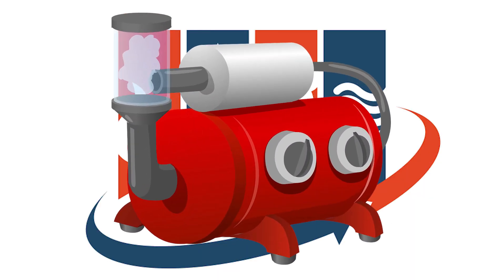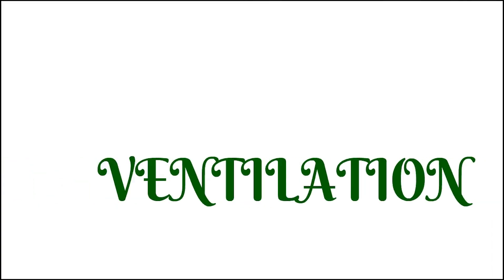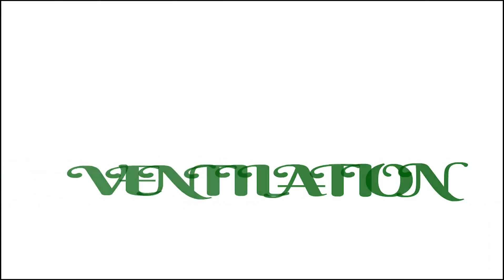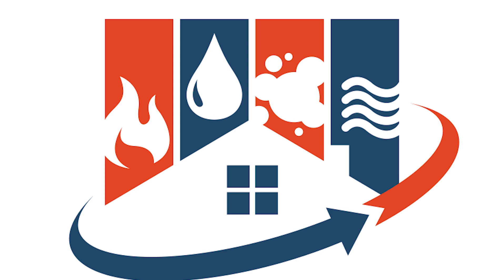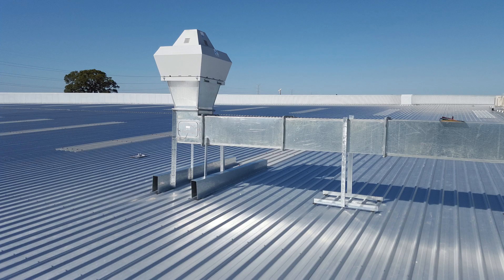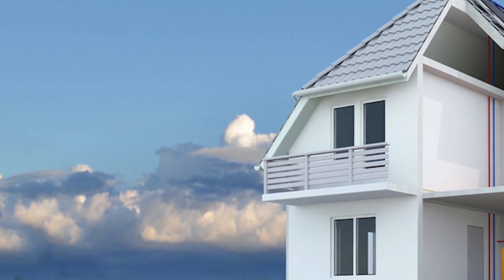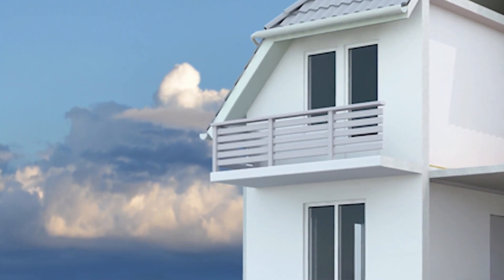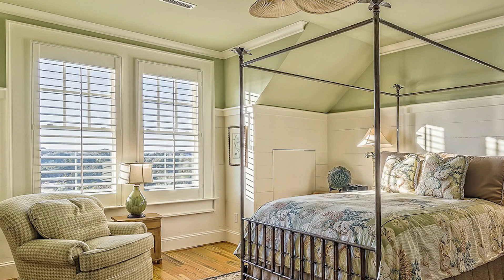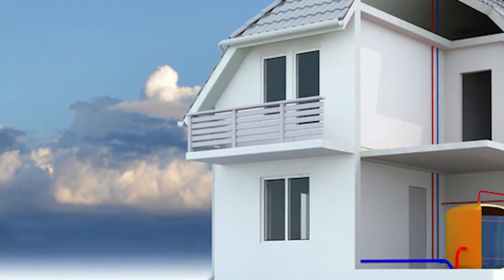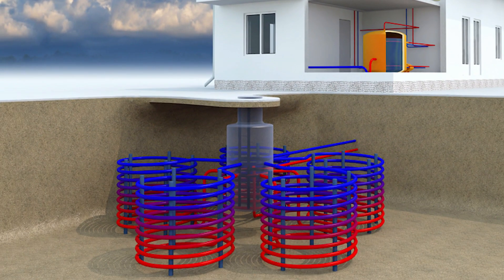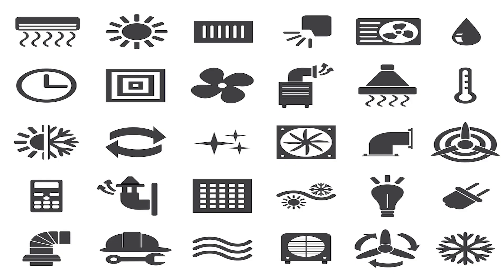The V means ventilation, which is the science of exchanging and circulating air within a building. It may be by natural means, where building features such as windows, louvers, and air vents are considered, or by mechanical means using forced equipment such as fans and air-to-air heat exchangers.